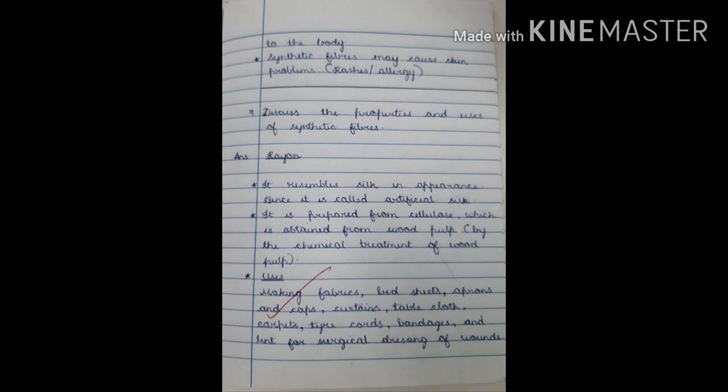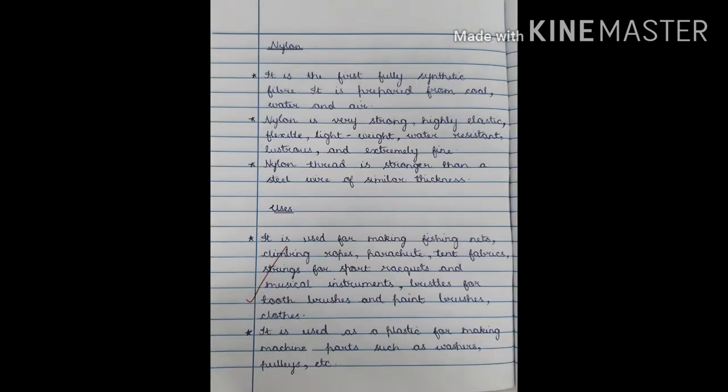Ninth question: discuss the properties and uses of synthetic fibers. Rayon — it resembles silk in appearance, hence it is called artificial silk. It is prepared from cellulose obtained from wood pulp by chemical treatment. Uses: making fabrics, bed sheets, aprons, caps, curtains, table cloth, carpets, tire cords, bandages, and lint for surgical dressing of wounds.